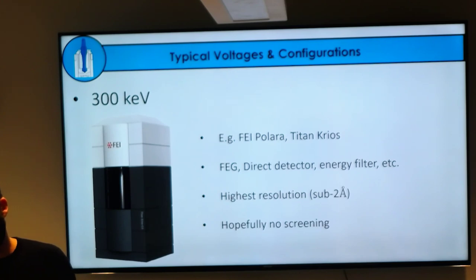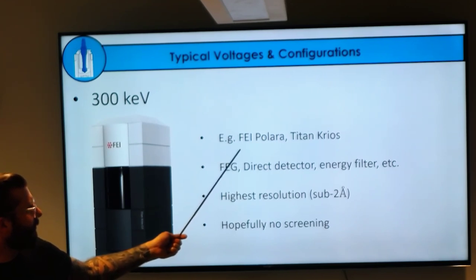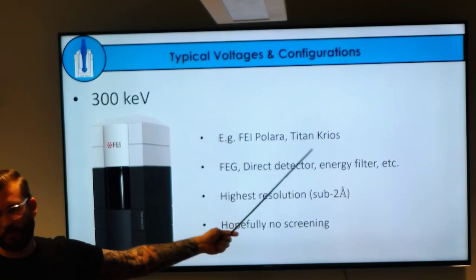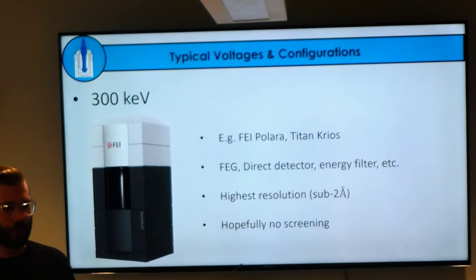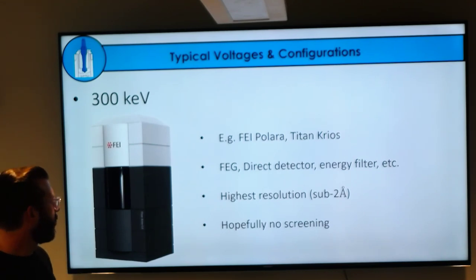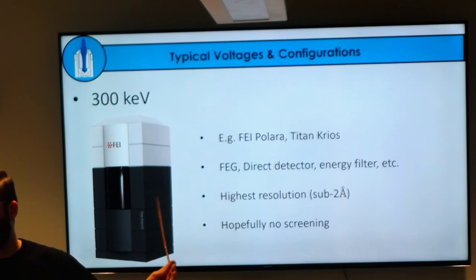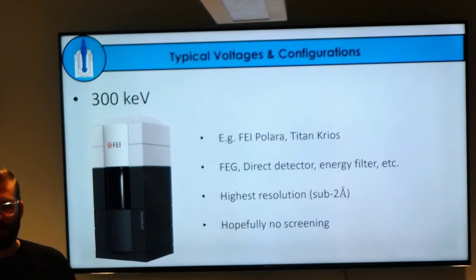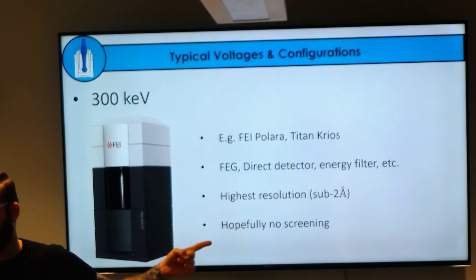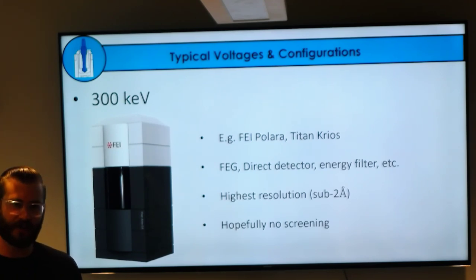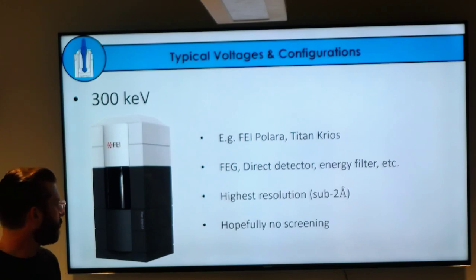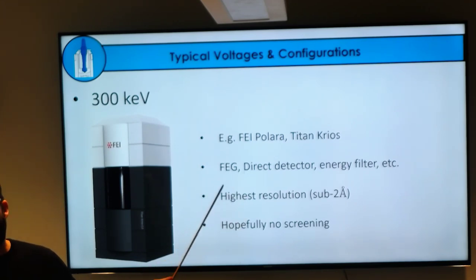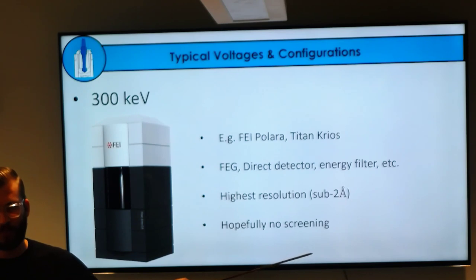At the very high end, the one everybody wants to use, is 300 kV. You have somewhat older models like the FEI Polara, or most famously the Titan Krios or the Jeol Cryo-ARM. These are equipped with top-of-the-line stuff: field emission guns, direct detectors, energy filters, phase plates, CS correctors, and other things that improve imaging. These are capable of the highest resolution sub-2-angstrom range; I think apoferritin at 1.5 angstroms is currently the highest.